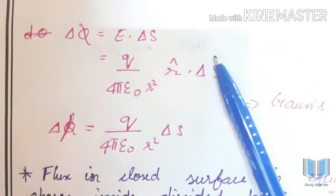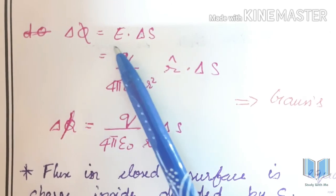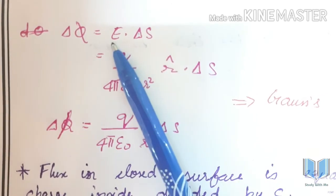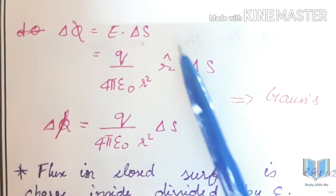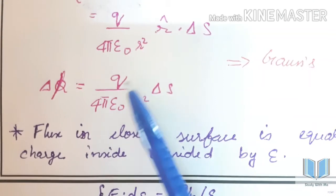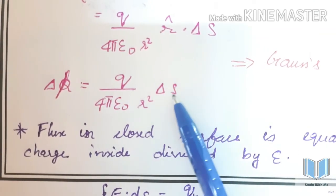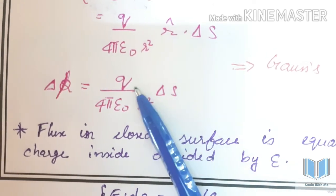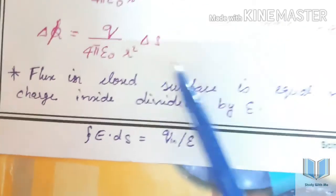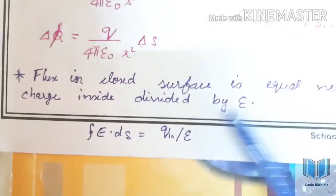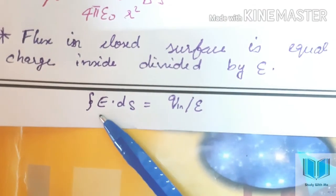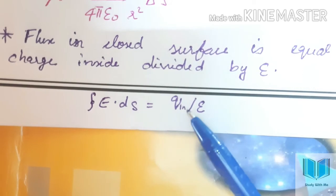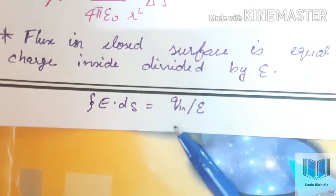Next is Gauss's Law. It is important for the equation. Electric flux is equal to E dot delta s, which equals q by 4πε₀ r squared. Flux through a closed surface is equal to the net charge inside divided by epsilon. The line integral of E dot ds equals q by epsilon.